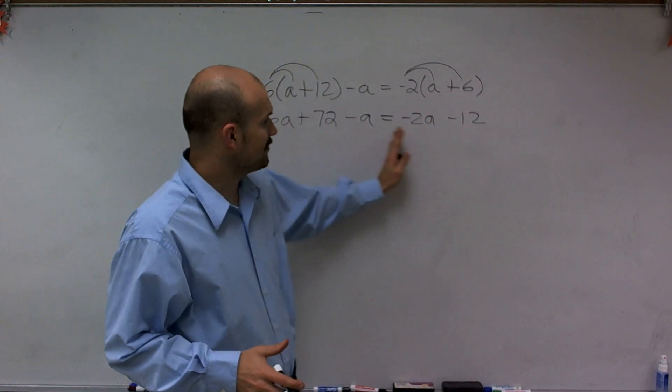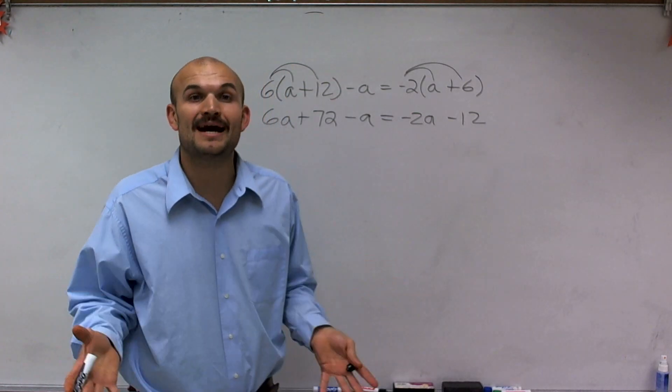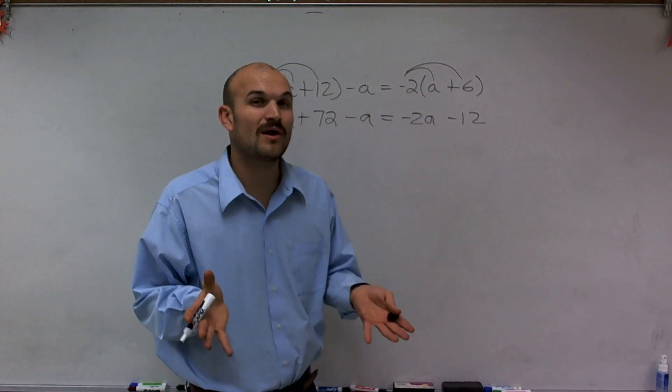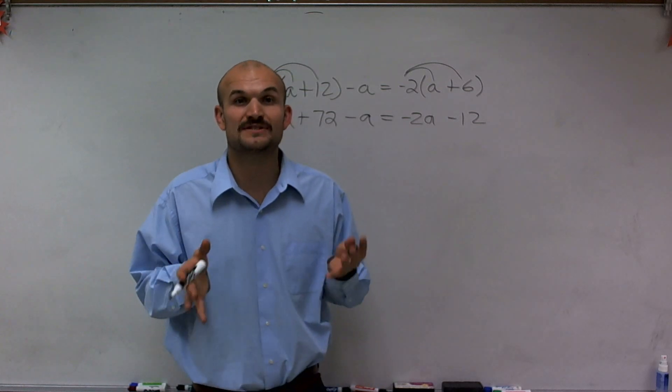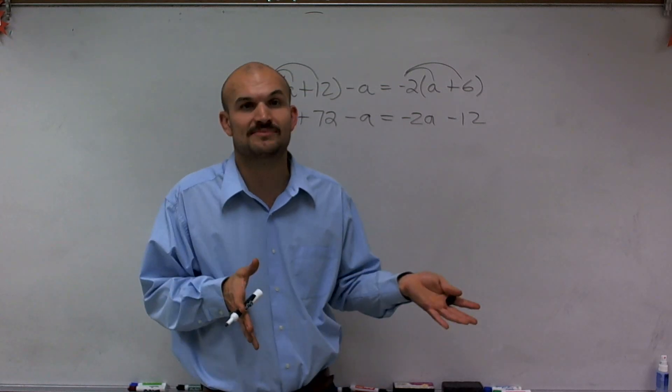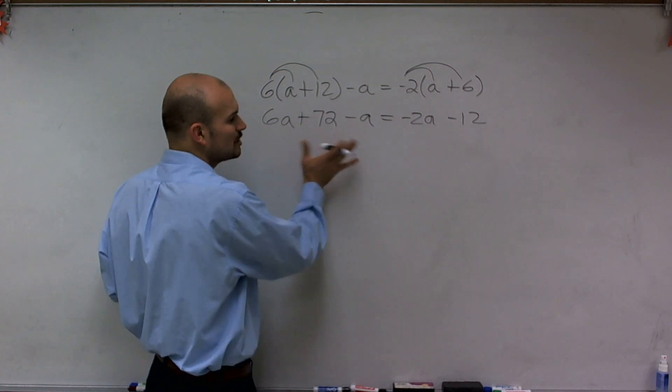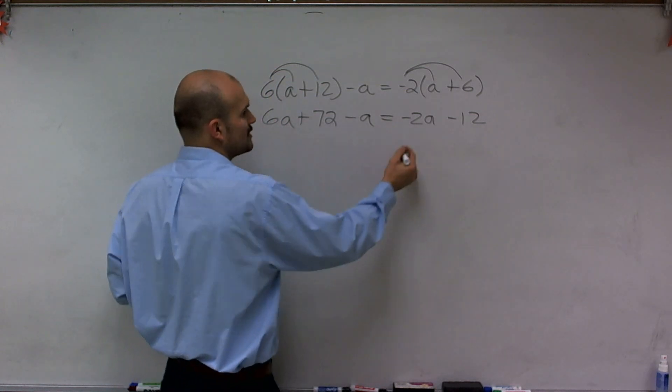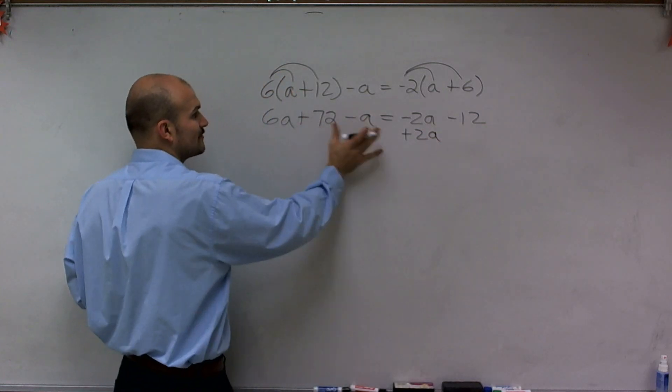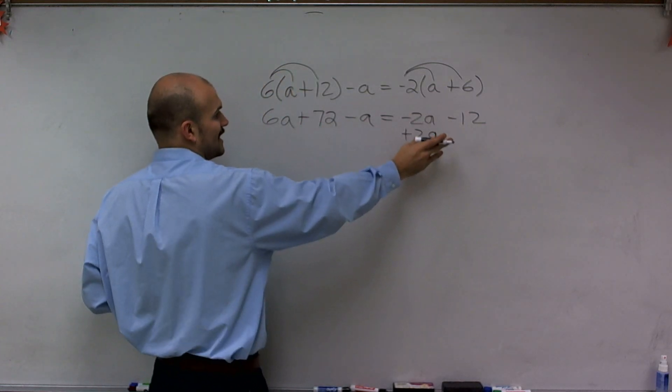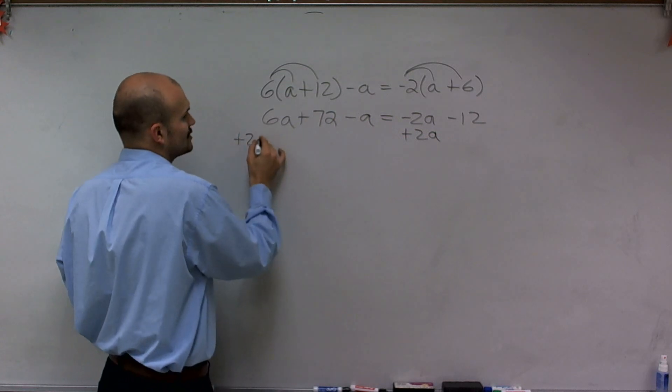So now I've simplified my terms. And I want to see, can I combine anything any way further? But before I even get to that, my main job to get your variable by itself is you first got to get all your variables onto the same side. So before I could combine this a little bit, I'm going to get my variables all on the same side. Now since I already have two a's over here, I'm going to eliminate the a on the right side and add it over here to the left side.